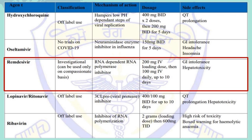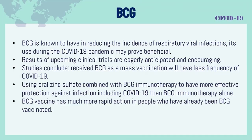BCG vaccine is known to reduce the incidence of respiratory viral infections; its use during the COVID-19 pandemic may prove beneficial. Results of upcoming clinical trials are eagerly anticipated and encouraging. Studies conclude that populations that received BCG as a mass vaccination will have a lower frequency of COVID-19. Using oral zinc sulfate combined with BCG immunotherapy may provide more effective protection against infection, including COVID-19, than BCG immunotherapy alone. BCG vaccine has much more rapid action in people who have already been BCG vaccinated.